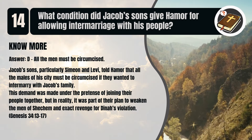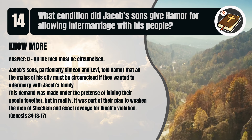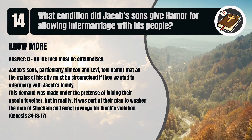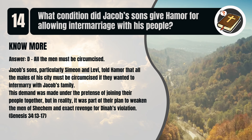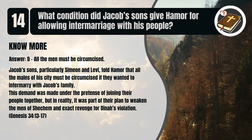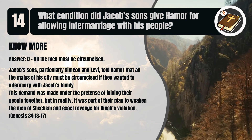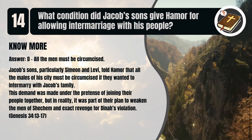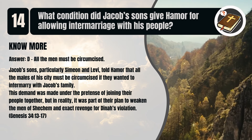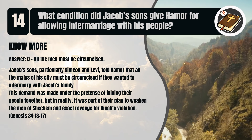That's D. All the men must be circumcised. Jacob's sons, particularly Simeon and Levi, told Hamor that all the males of his city must be circumcised if they wanted to intermarry with Jacob's family. This demand was made under the pretense of joining their people together, but in reality it was part of their plan to weaken the men of Shechem and exact revenge for Dinah's violation. Genesis chapter 34 verses 13 to 17.